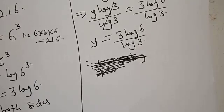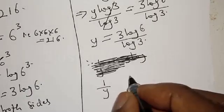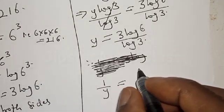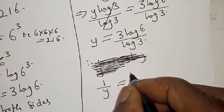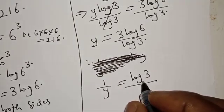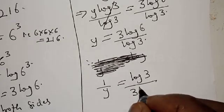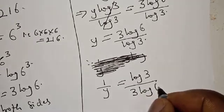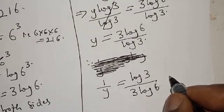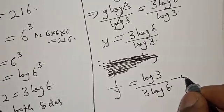Then let's take the reciprocal: 1 over y equals log 3 over 3 log 6. Let's call this equation 4.